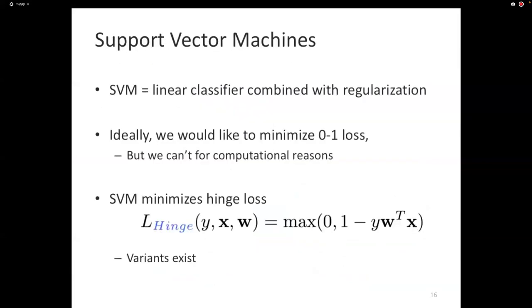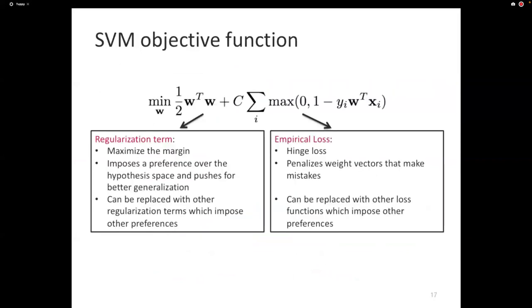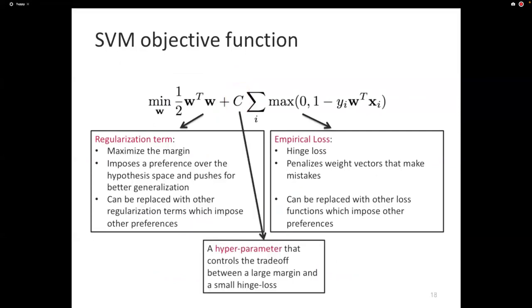We've seen SVMs. And there are, actually, there are a few variants of SVMs that we've not encountered. The reason SVM nicely fits into this, we've already encountered this before. There's the regularizer. There's the empirical loss. The regularizer maximizes the margin. The empirical loss penalizes mistakes. And there's a hyperparameter C that trades off between them, that controls how much of each do you like.